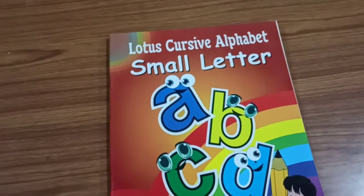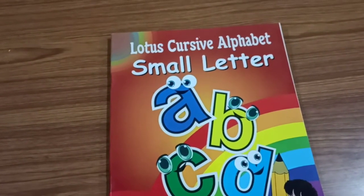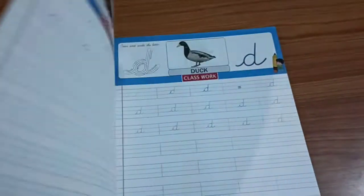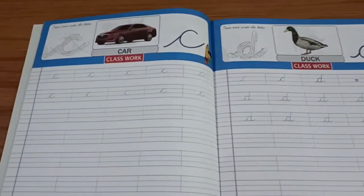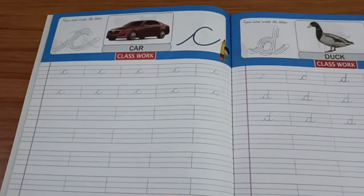Good morning parents, good morning children. This is lotus cursive alphabet, small letter. In this book we have completed till letter C.